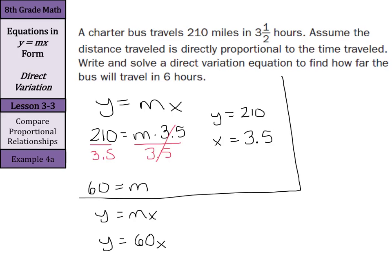Now once I have this information, I can make a new y equals mx equation. But now I know m. I know that y equals 60x. So y here was our miles, x was our time. And we're now given 6 hours. We're given our time and we're looking for our miles. So we can substitute in. We can say y is going to equal 60 times 6. And 60 times 6 is 360 miles.